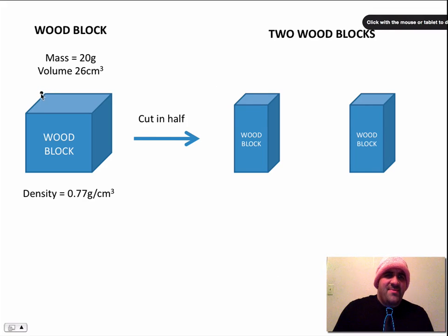So right here we see we have the wood block in question. It has a mass of 20 grams, a volume of 26 centimeters cubed, and that comes out to a density of 0.77 grams per centimeter cubed. We just calculated that. Mass divided by volume is density.